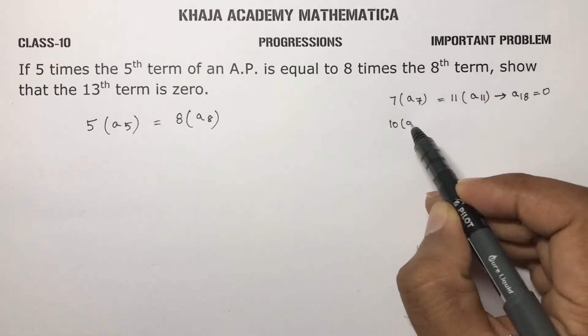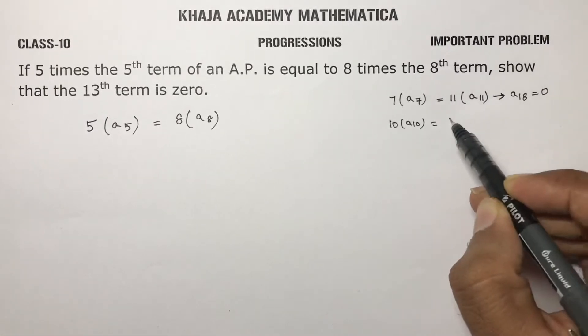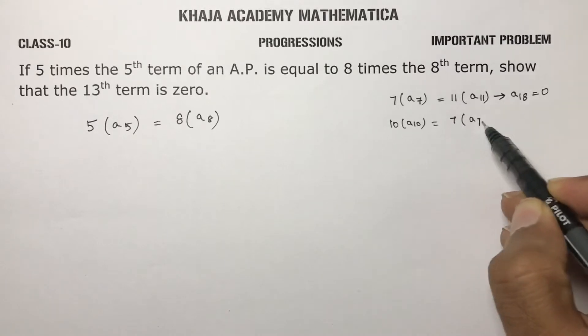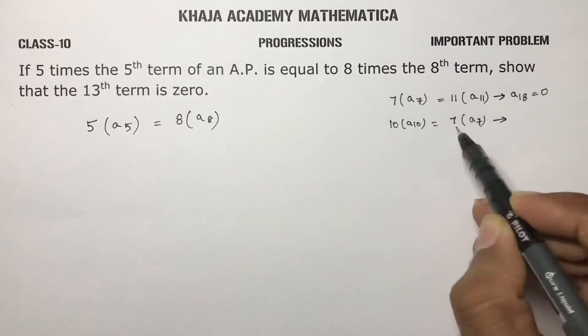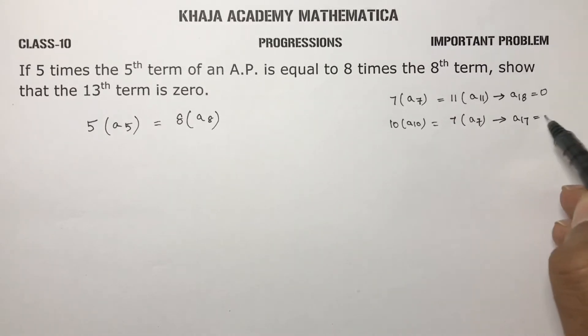In the same way, 10 times 10th term, 7 times 7th term, 10 plus 7, 17th. The 17th term will be 0.